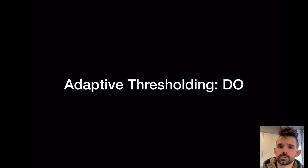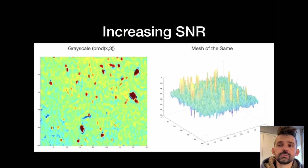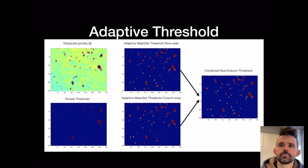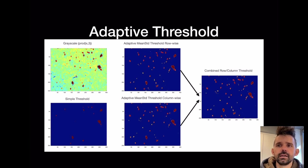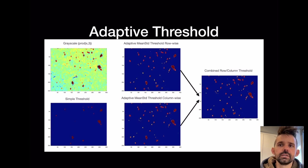Instead, you should use adaptive thresholding. If you use a larger global threshold you'll miss some of the smaller particle bumps, but these tiny bumps are distinguishable from the background if you look at localized regions. I make a grayscale image from the product of all three RGB planes, then use a mean plus an offset of one standard deviation as a baseline threshold to drop background noise. You apply this row-wise and column-wise, combine them, and as a result you can see the smaller particles — though getting the right threshold is still the trick.